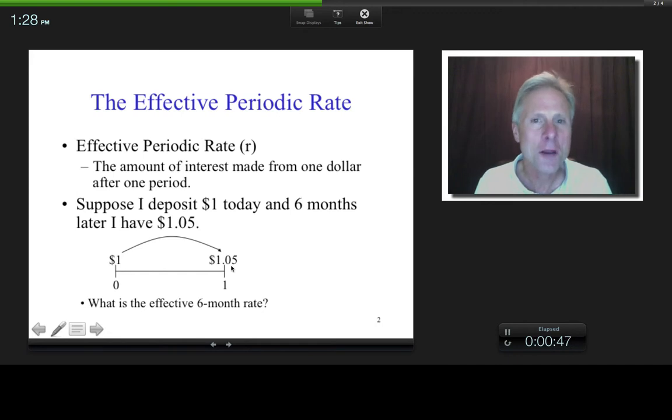How much of this dollar five is interest? Five cents, right? Which, on a percentage basis, is how much? Five percent. So what's the effective six-month rate? Five percent. So it's that simple. The amount of interest made from one dollar after one period, but on a percentage basis.